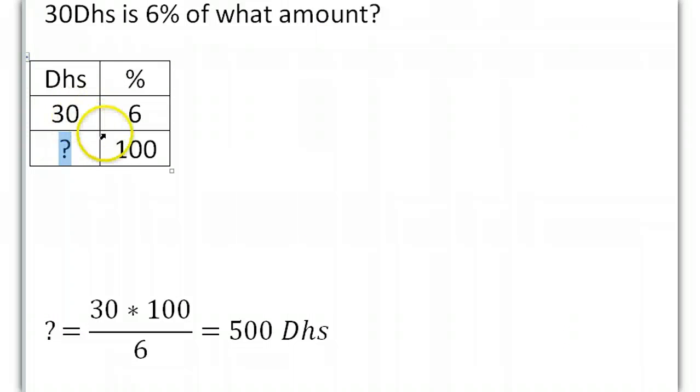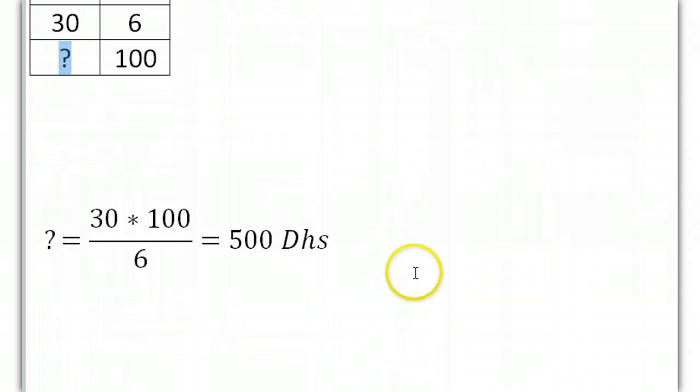Here's my triangle. Here's the diagonal. Here's the right angle. 30 times 100 divided by 6. 30 times 100 divided by 6 equals 500 dirhams.